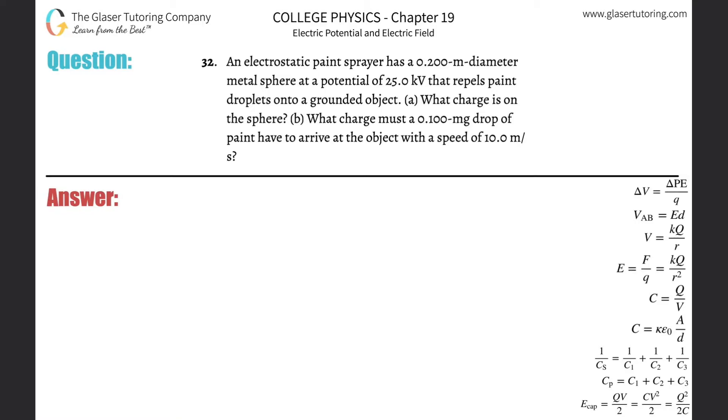Number 32, an electrostatic paint sprayer has a 0.2 meter diameter metal sphere at a potential of 25 kilovolts that repels paint droplets onto a grounded object. Letter A, what charge is on the sphere?